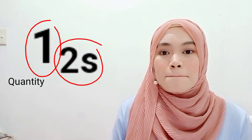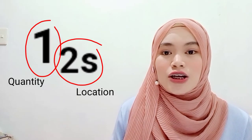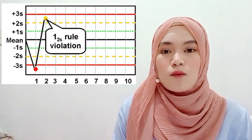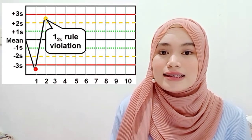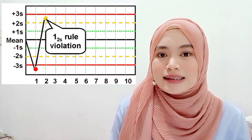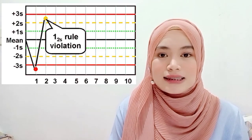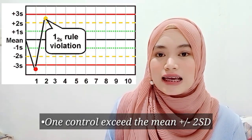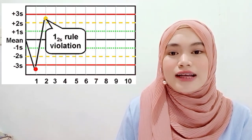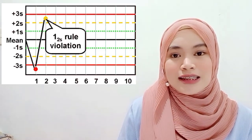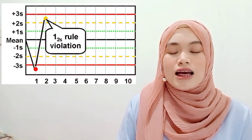Here's a tip: when you see Westguard control rules, the first digit stands for the quantity of the control, and the lower digit stands for the location of the control — where it exceeds. For the first rule, the 1-2s: the number one stands for the quantity of the control, meaning one control, and 2s stands for the location of the control. So 1-2s means that one control exceeds the mean plus or minus 2 SD. The mean is the measure of central tendency, and the SD — standard deviation — is the measure of dispersion of values from the mean. We have the positive SD on the upper part and the negative SD on the lower part.